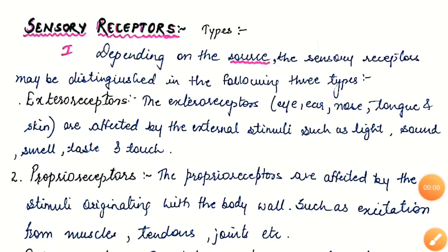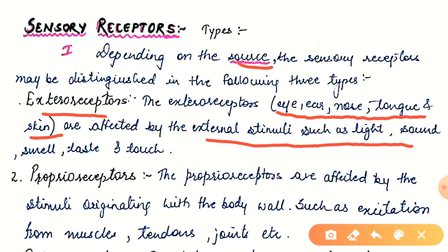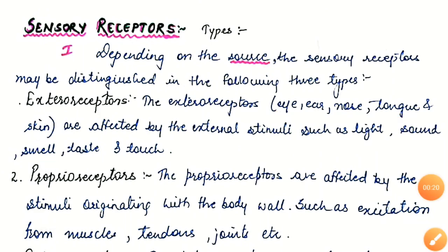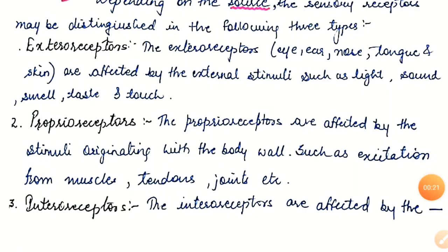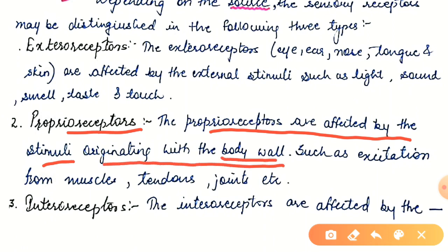Now we are seeing types of sensory receptors. Depending on the source, there are three kinds. First are exteroceptors — these include eye, ear, nose, tongue, and skin — and they are affected by external stimuli such as light, sound, smell, taste, and touch. Second are proprioceptors — they are affected by stimuli originating within the body wall, such as excitation from muscles, tendons, joints, etc.